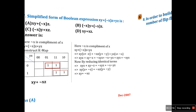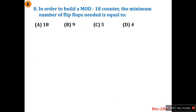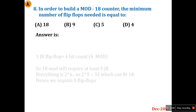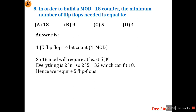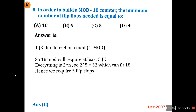Question 8: To build a mod-18 counter, the minimum number of flip-flops needed is? One JK flip-flop gives a 2-bit count (covers up to 4). Four flip-flops cover up to 2^4 = 16 counts, but mod-18 needs 18 states, so 16 is not enough. One more flip-flop is required, giving 2^5 = 32 ≥ 18. So the answer is 5 flip-flops. Option C is correct.